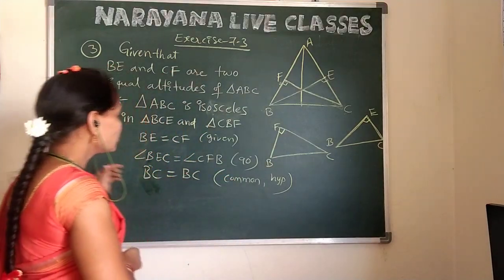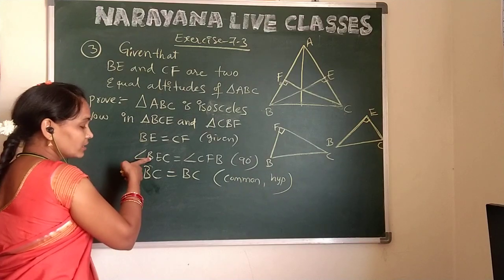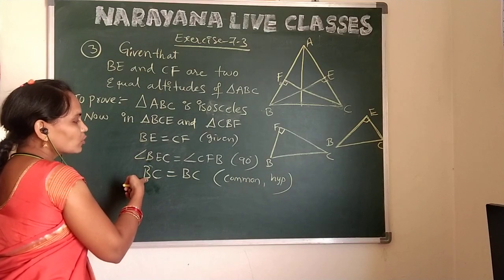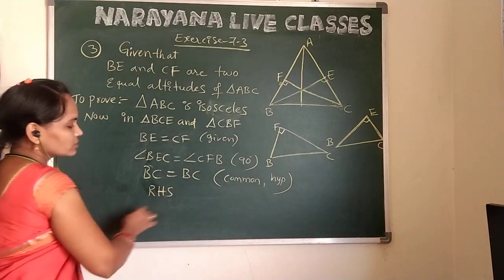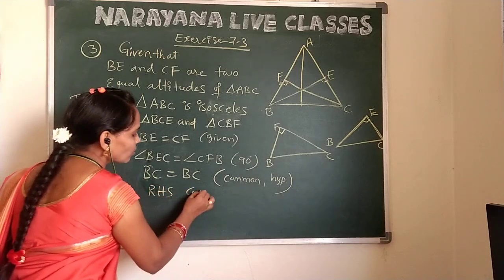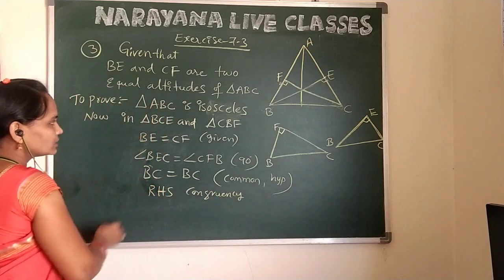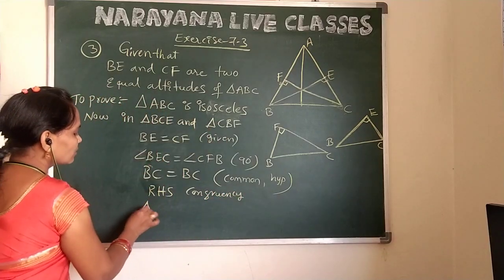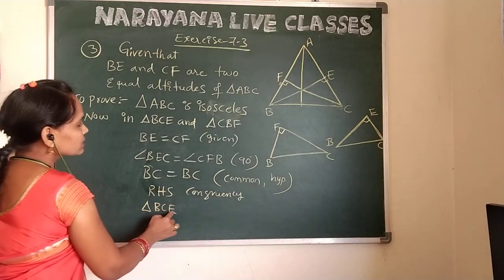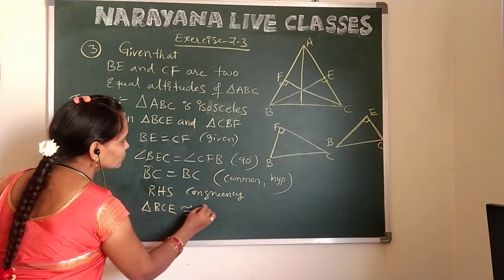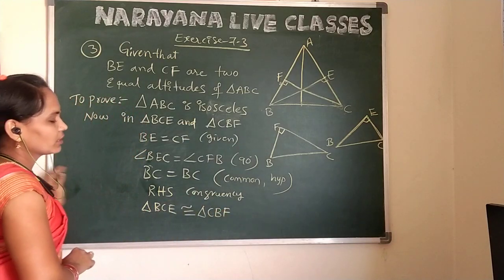So now we have: one side equal, one right angle equal, and the hypotenuse equal. By RHS congruence, we can say that these two triangles are congruent. Triangle BCE is congruent to triangle CBF.